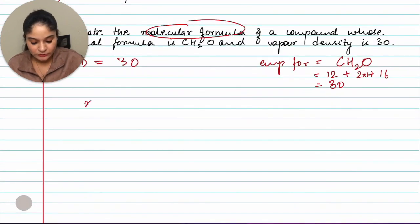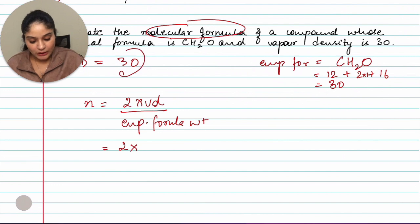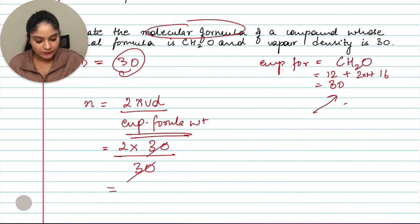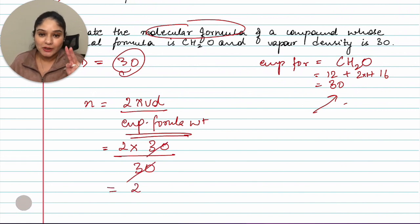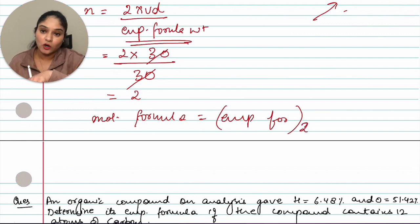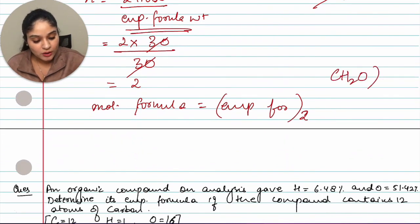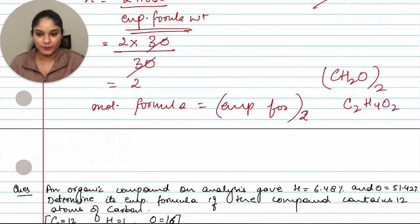With n = 2, the molecular formula = (CH₂O) × 2 = C₂H₄O₂. So C₂H₄O₂ is your molecular formula.